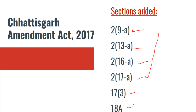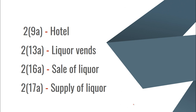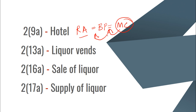Section 2 subsection 9a deals with the definition of a hotel. It says: any building or part of a building, when residential accommodation is provided for business purpose, in consideration of money — when residential accommodation is provided for business purpose for monetary consideration, that becomes a hotel. It can be a full building or part of a building.